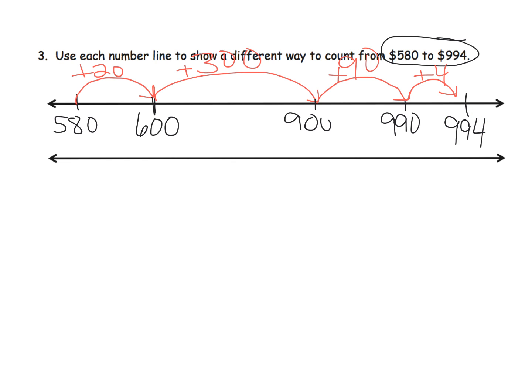So that's one way that we could count from 580 all the way up to 994. And the thing is, the reason we call this an empty number line is you see this hop right here represents 300, well this hop right here, which is about the same size, is 90, and this hop is about the same size as 90, but this one's only 4. So the empty number line, these hops are not intended to be proportional. They're not supposed to show relative size.